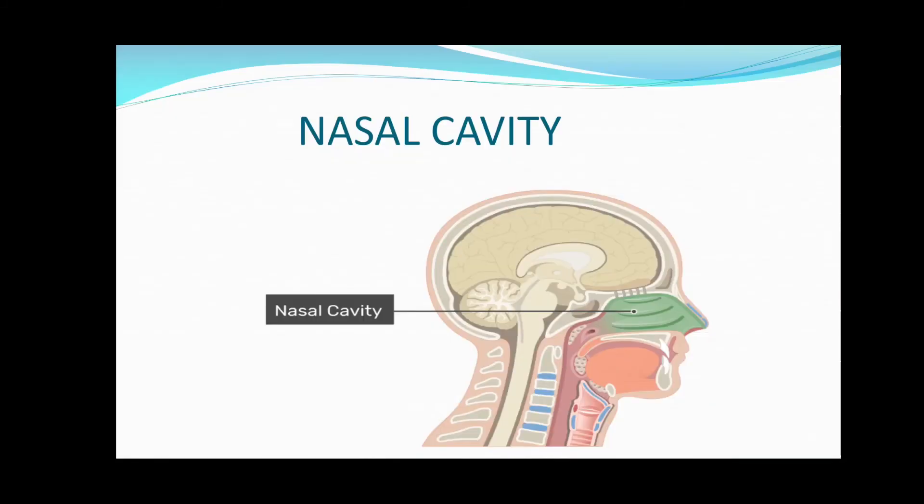First is the nasal cavity. When air enters through the nose into the nasal cavity, it gets warmed up and also gets filtered. The hairs and the mucus which are present inside the nostril stop the dust and germs from entering the respiratory system.